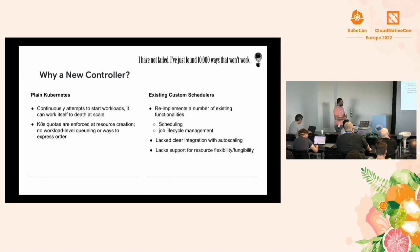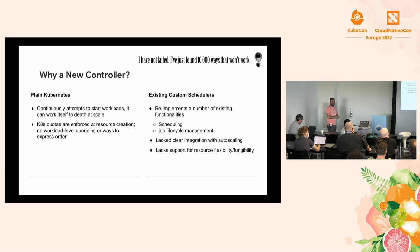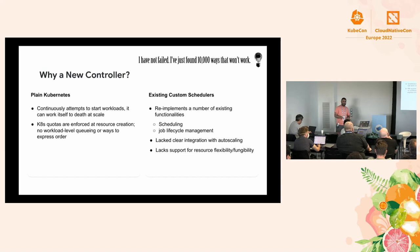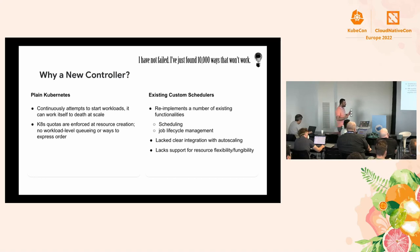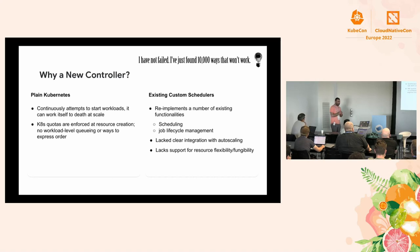There are multiple existing custom schedulers — they all fit nicely in different use cases. But one thing we wanted to avoid is re-implementing existing functionality. We didn't want to implement pod-to-node scheduling; we want the kube-scheduler to do that. We didn't want to re-implement the job controller. We wanted the core Kubernetes job controller to manage job lifecycle. Existing schedulers also didn't have clear integration with autoscaling, which is really important on the cloud. And nobody addressed the problem of resource flexibility and fungibility, neither at the API level nor mechanically. We want to make resource flexibility a first-class citizen of job queuing.